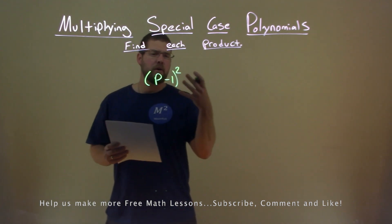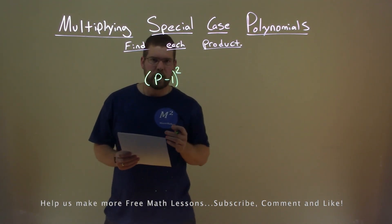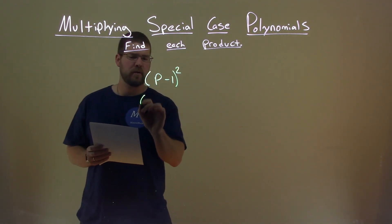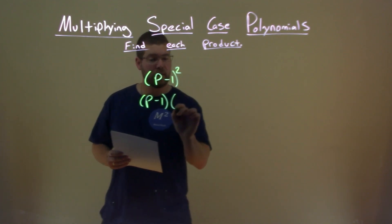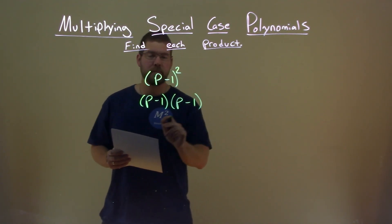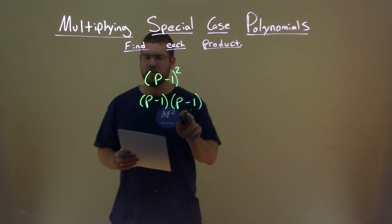Well, first we need to know our rules of having this squared. That is the same thing as writing p minus 1 times p minus 1. Now it's a lot easier to look at.